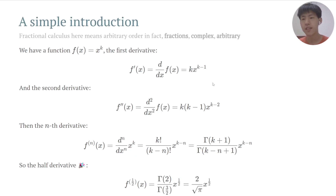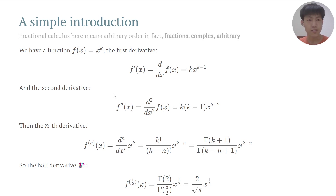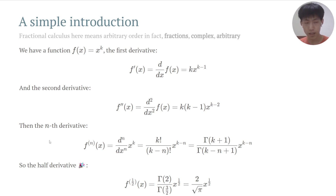Here we can see a simple introduction. Suppose we have a function f(x) equals x to the n-th power. We can easily get its first derivative and the second derivative, and then extend to the n-th power of f(x). So here we replace n with a half, and we get the half derivative of f(x). Very easy.